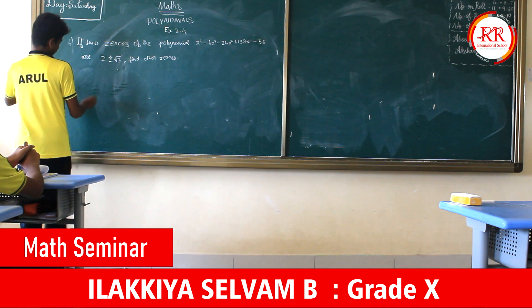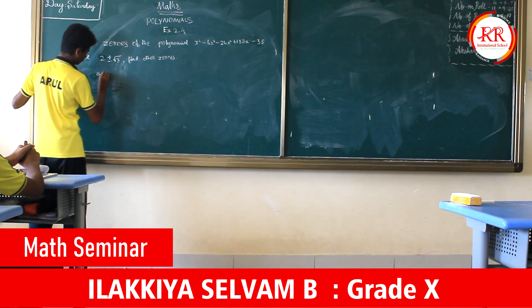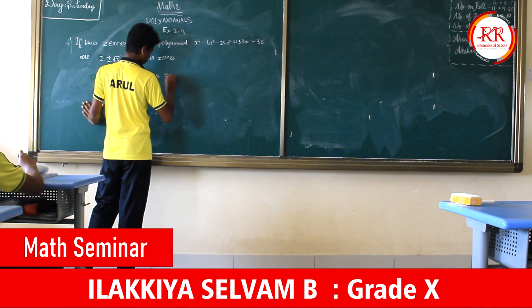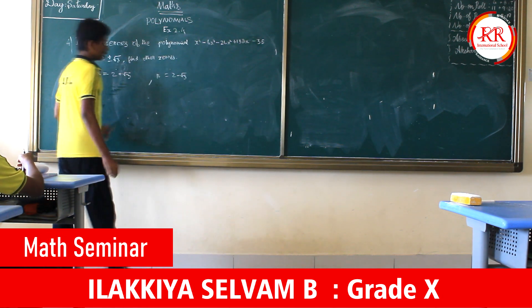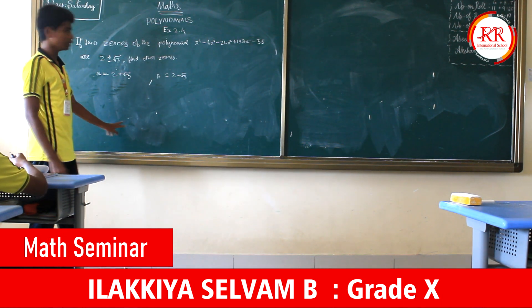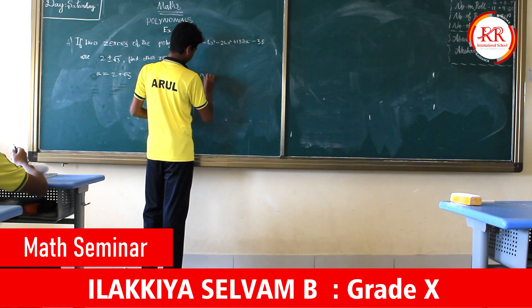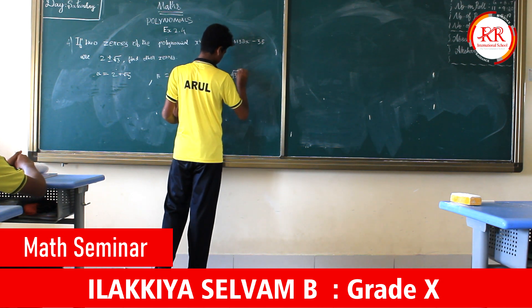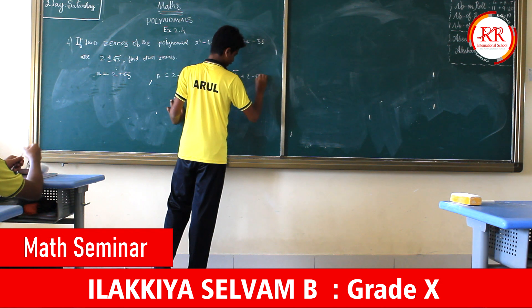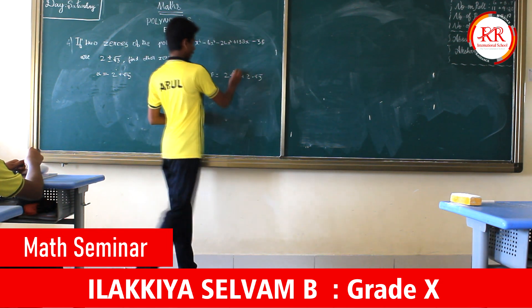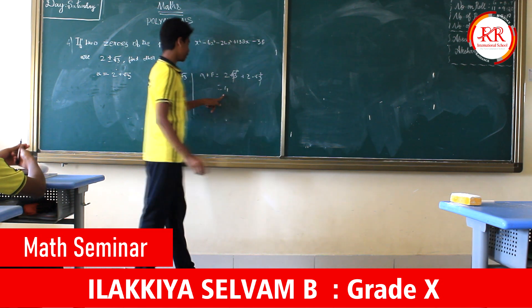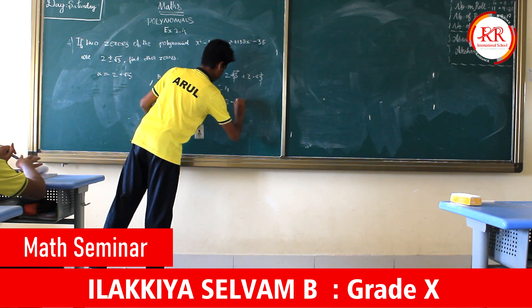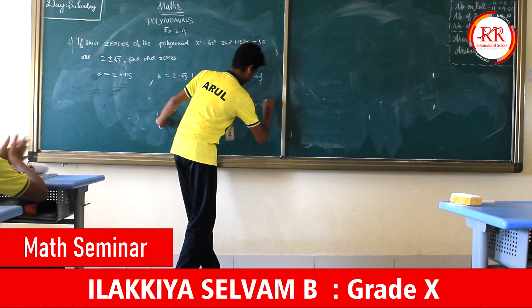We can assume alpha as 2 plus root 3 and beta as 2 minus root 3. We will use the identities for alpha plus beta and alpha into beta. Alpha plus beta equals (2 plus root 3) plus (2 minus root 3), and alpha into beta equals (2 plus root 3) into (2 minus root 3).